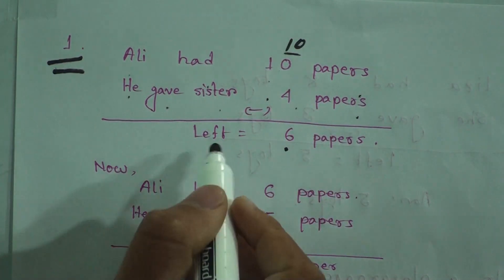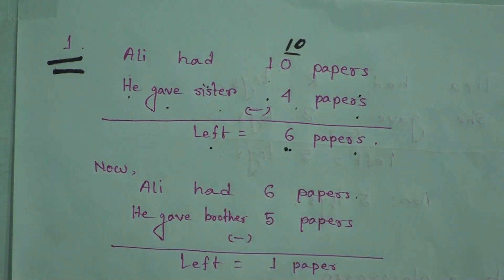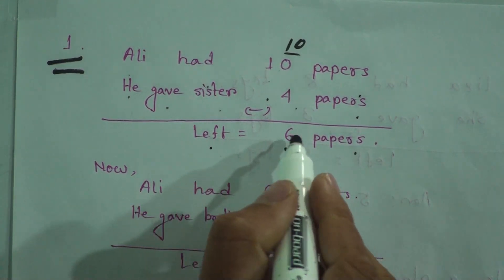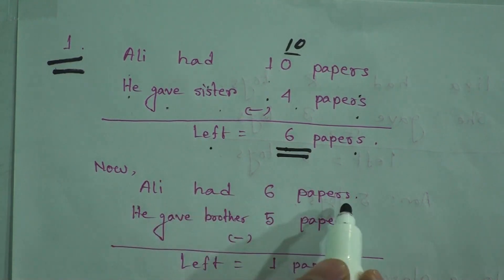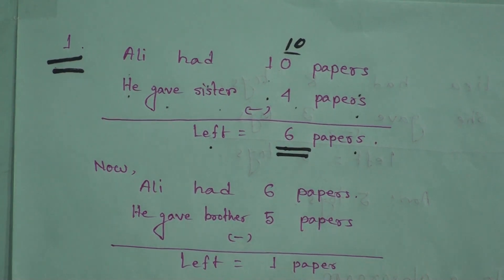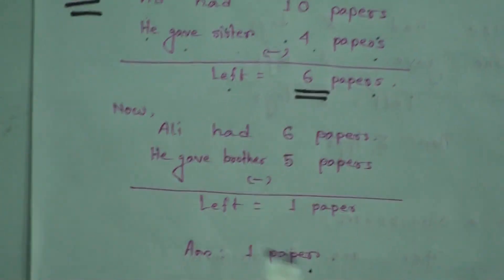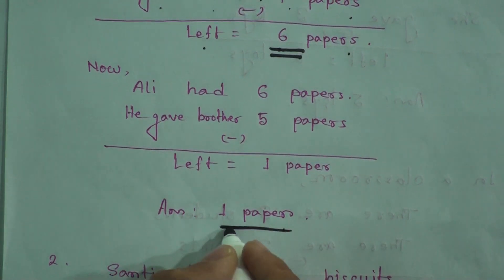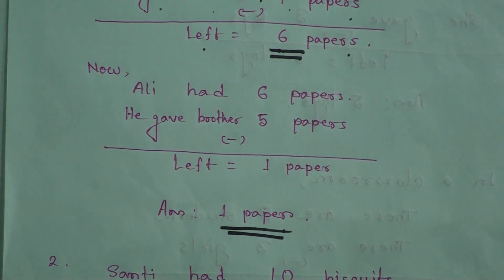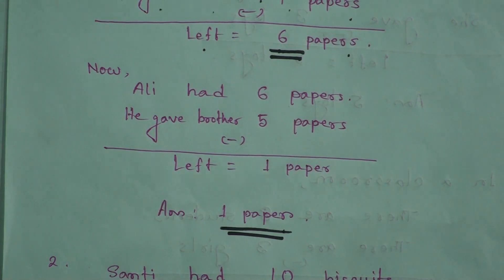Now Ali had 6 papers. Again he gave brother 5 papers. Then again we can subtract 5 from 6, it will be 1 paper. So finally Ali had 1 paper. How many papers are left with him? 1 paper is the answer. Hope my dear students you understood this one.